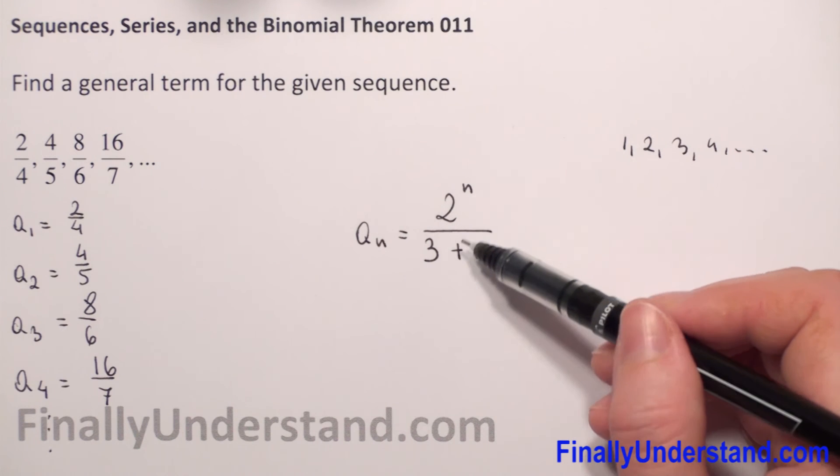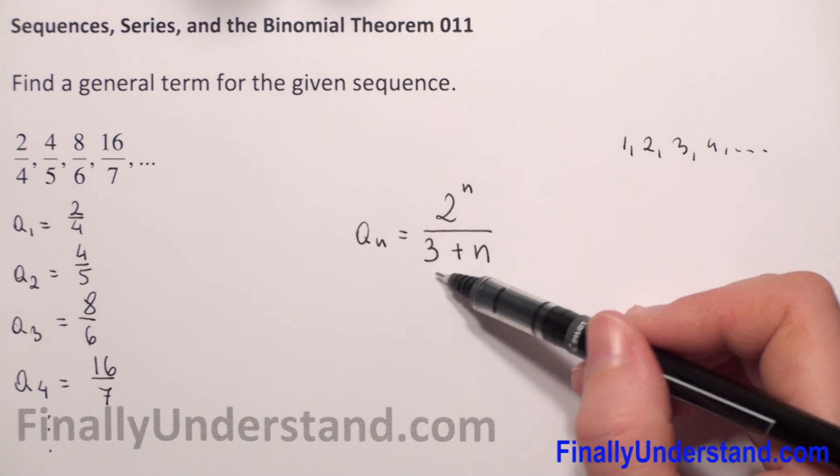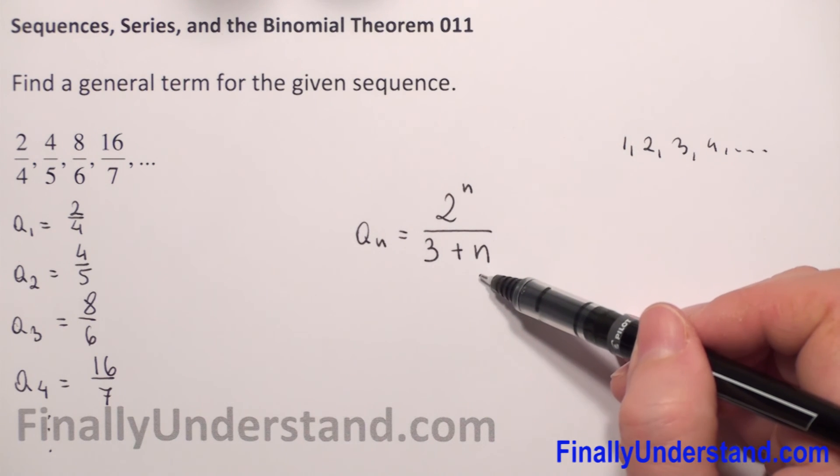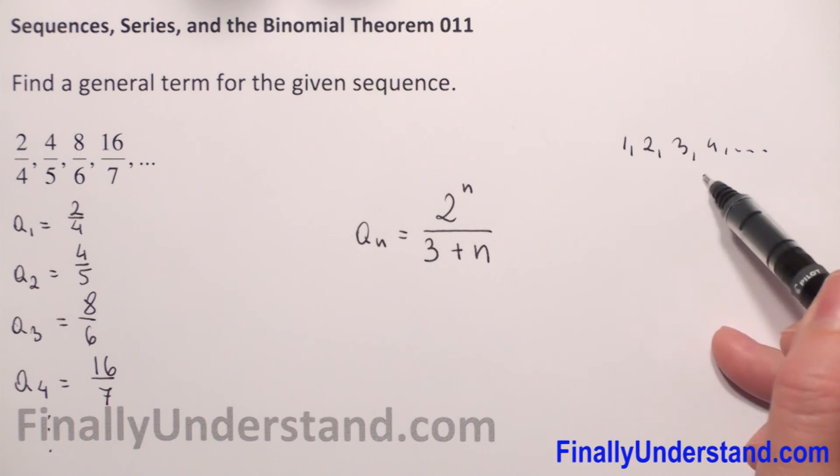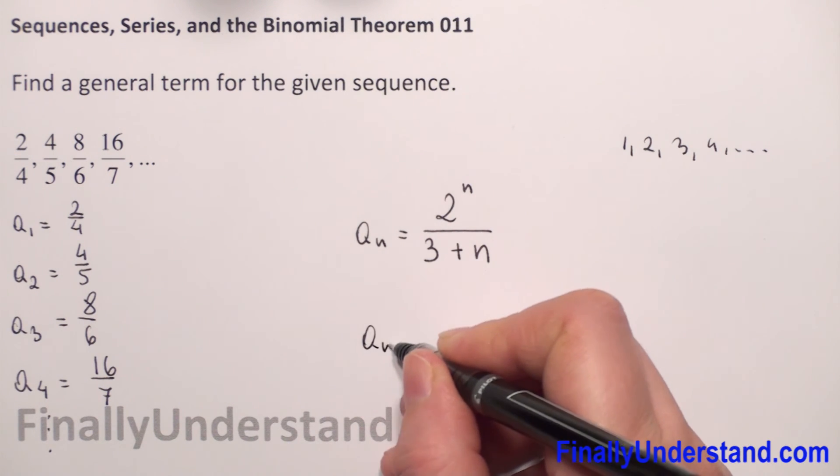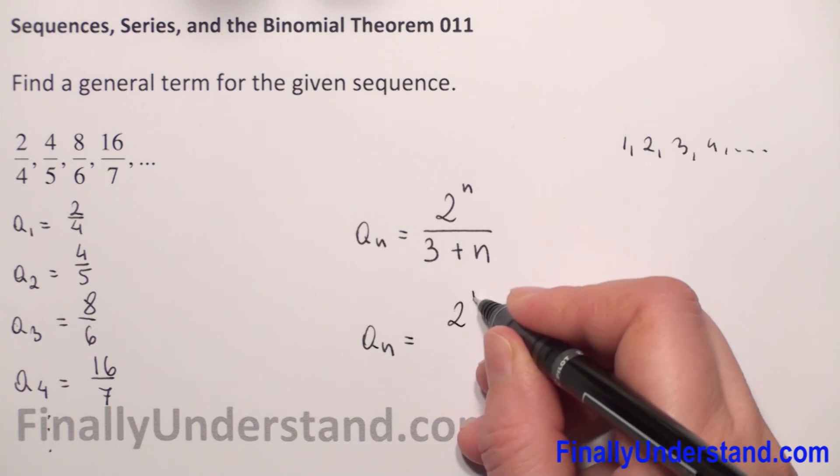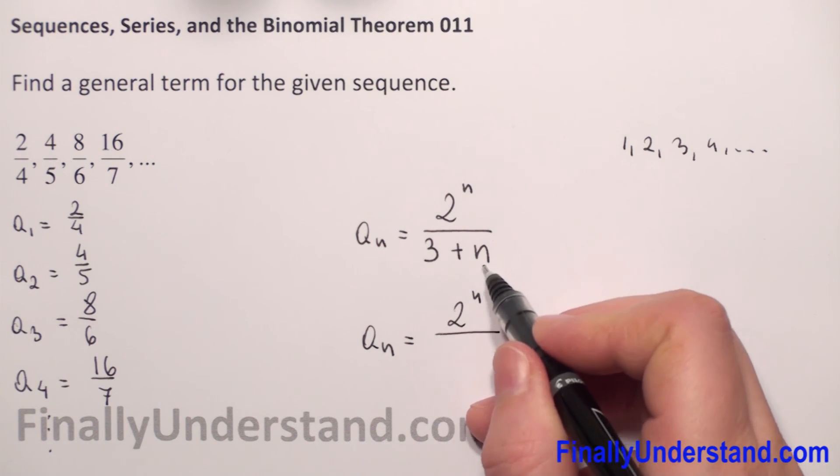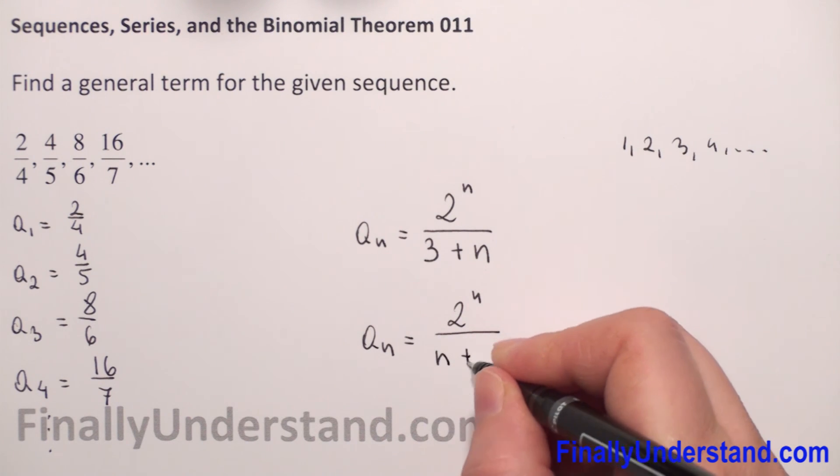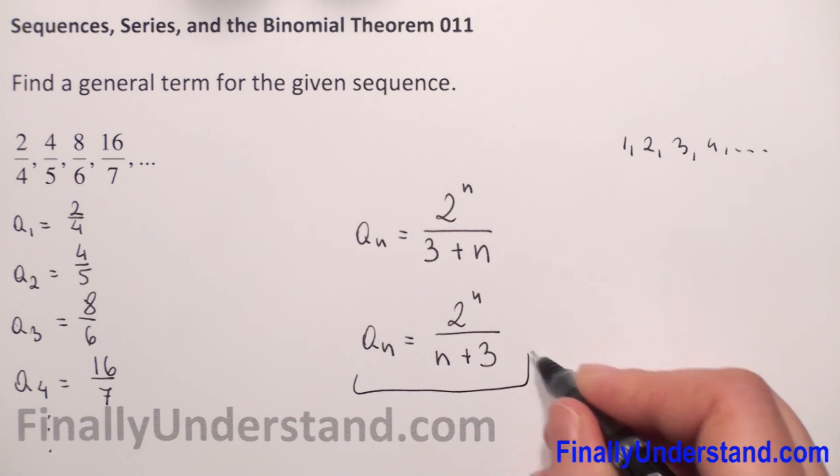When n is any positive integer, we can rewrite that a_n, the general term, is 2 to the power n over n plus the constant 3. So this is my solution.